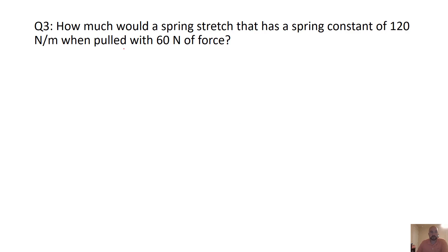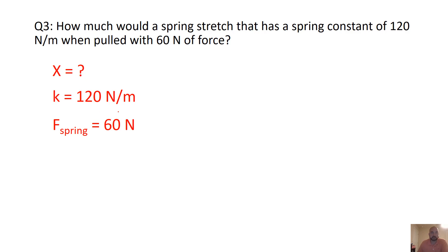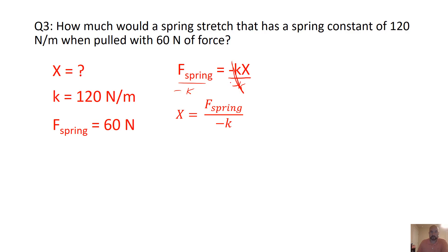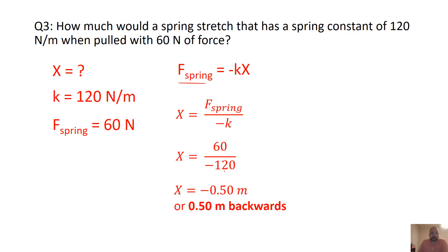How much would a spring stretch that has a spring constant of 120 N/m when pulled with a 60-newton force? We're solving for displacement x, given K = 120 N/m and F_spring = 60 N. We rearrange the equation — dividing both sides by negative k to isolate x. Plugging in our values gives x = negative 0.5 meters, meaning the spring is pulled 0.5 meters away from its equilibrium position.